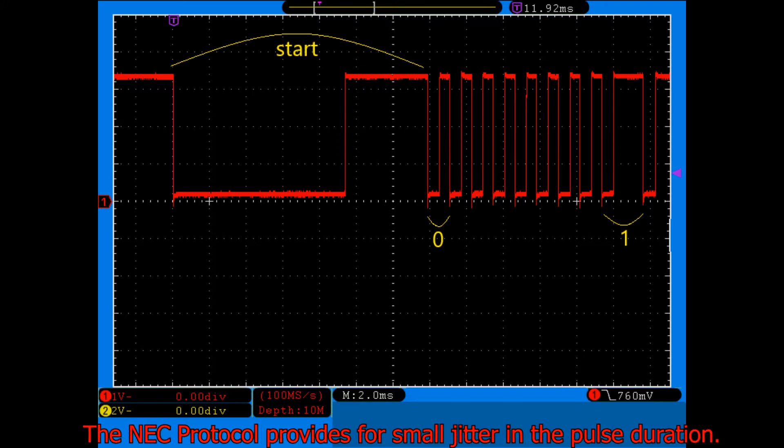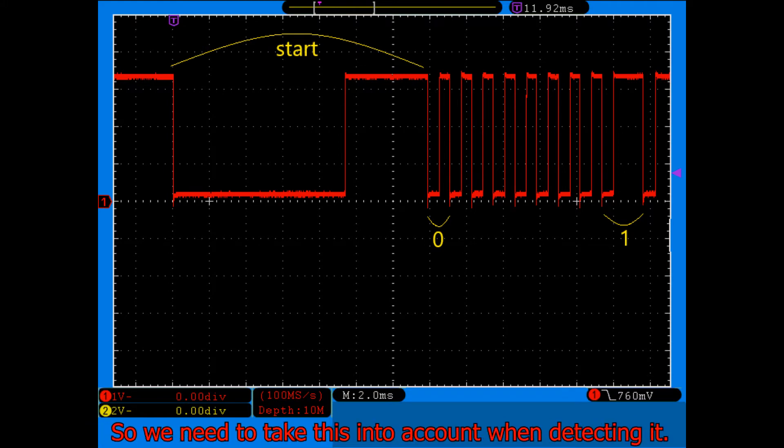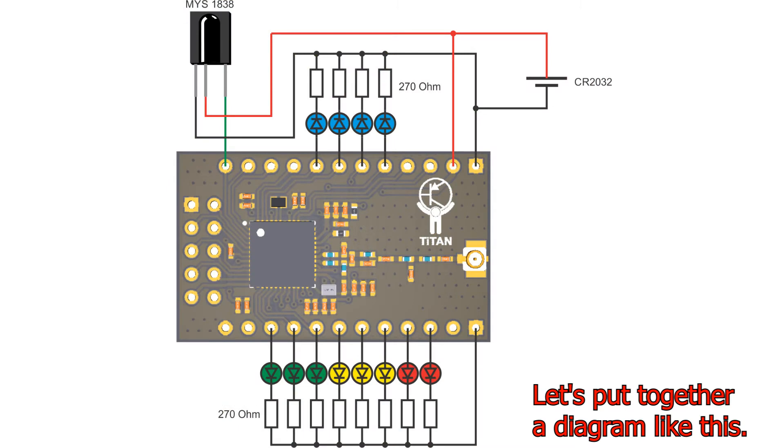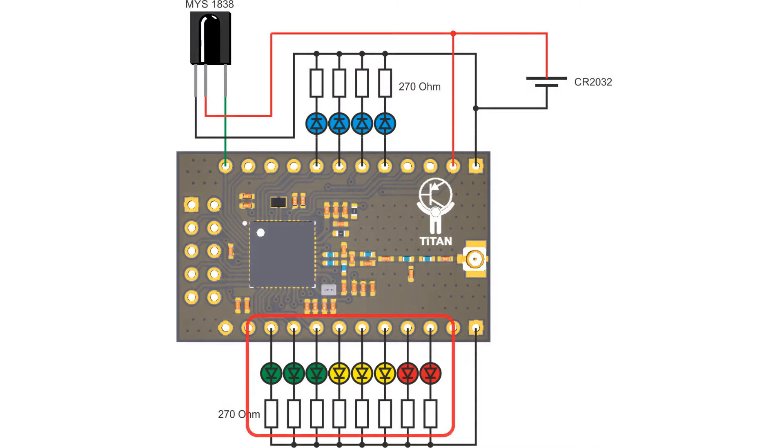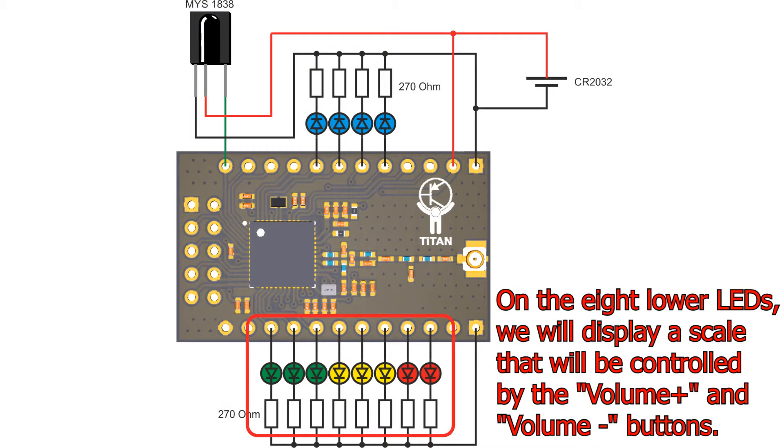The NEC protocol provides for small jitter in the pulse duration, so we need to take this into account when detecting it. Let's put together a diagram like this. On the 8 lower LEDs we will display a scale that will be controlled by the volume plus and volume minus buttons.